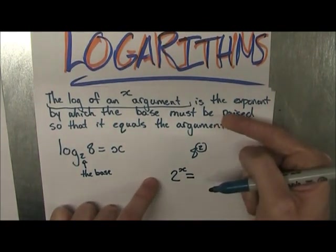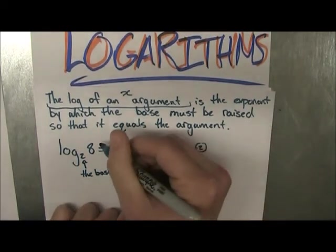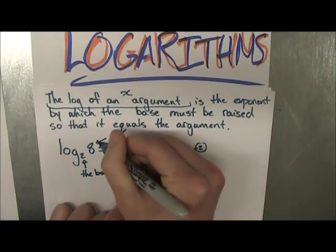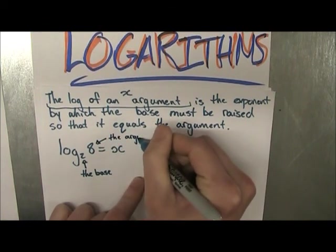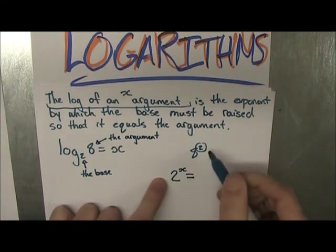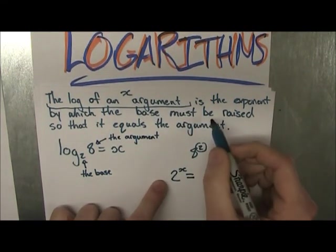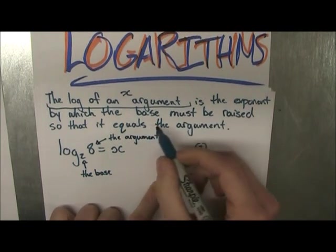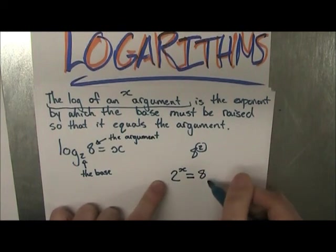What is the argument? Here is the second bit of new language. The argument is this number right here, the number that you're actually taking the log of. So the log of the argument, the solution, is the exponent by which the base must be raised so that it equals our argument. And our argument is 8.